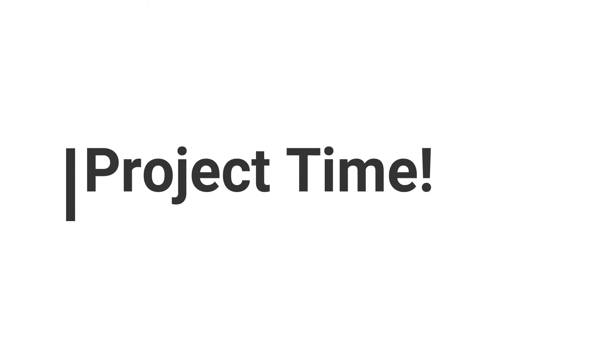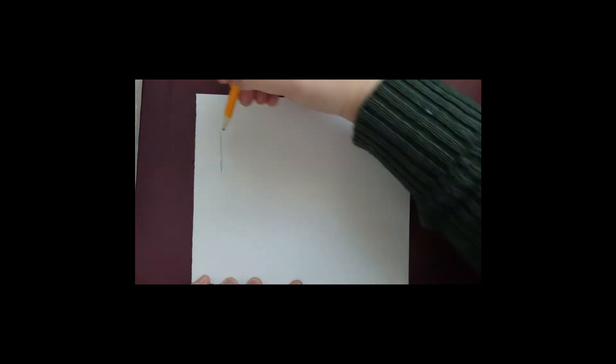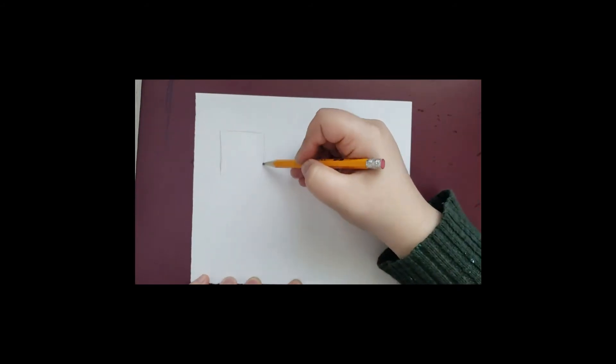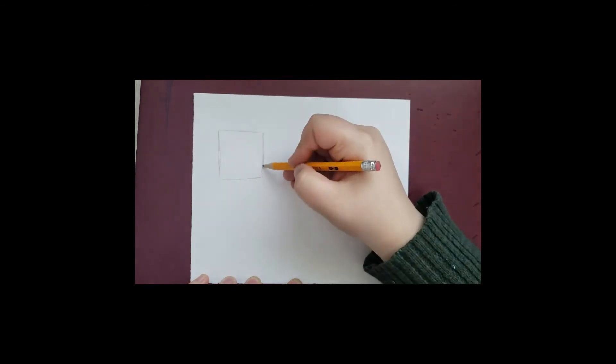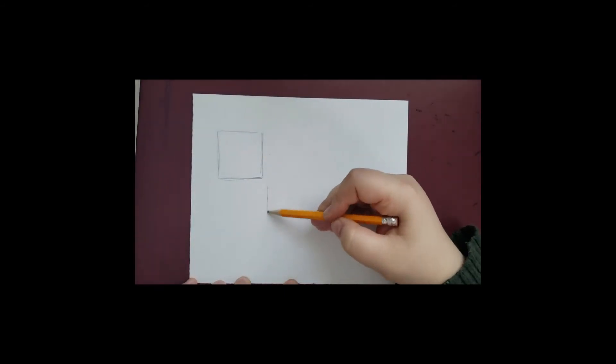On to the projects. For this project we're going to draw a series of squares. Inside the squares we're going to create different textures with glue. Now if you don't like or don't have any glue, you're always welcome to skip this project and move on to the next one.